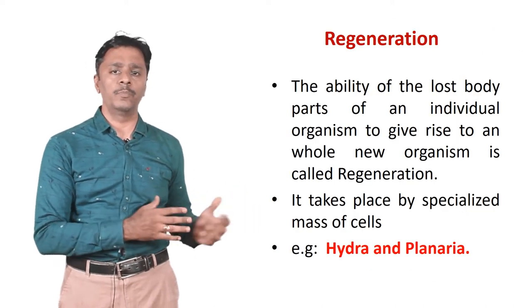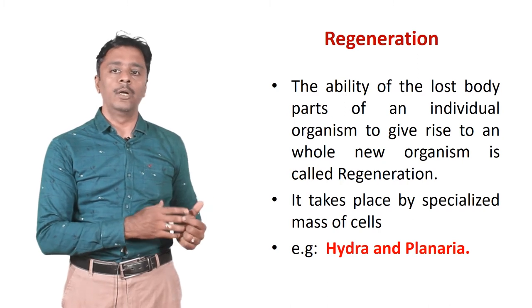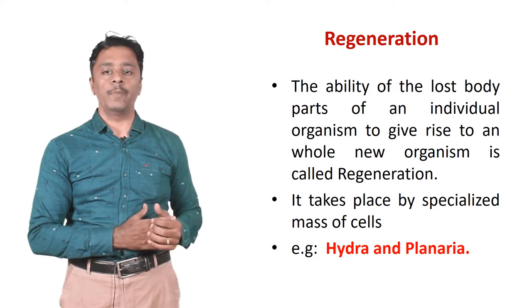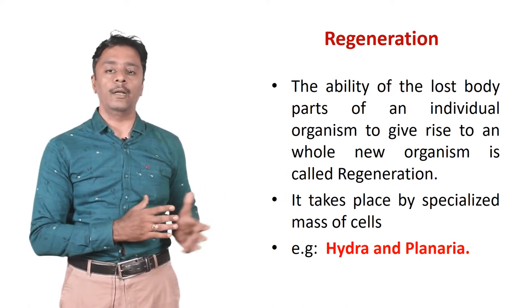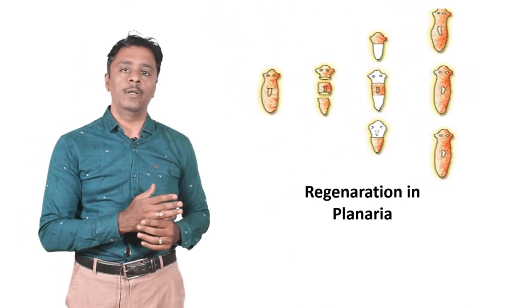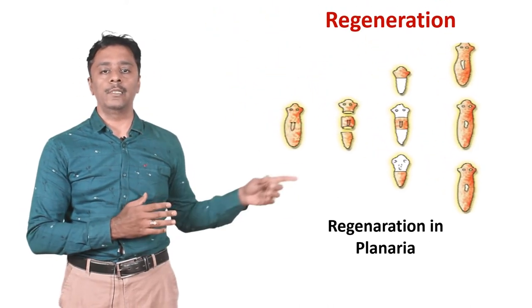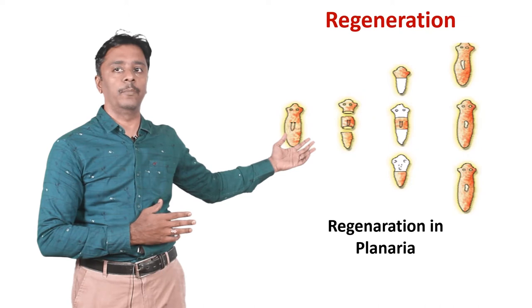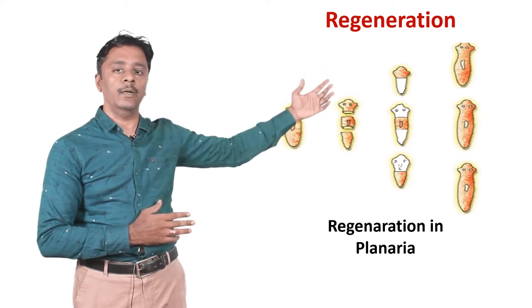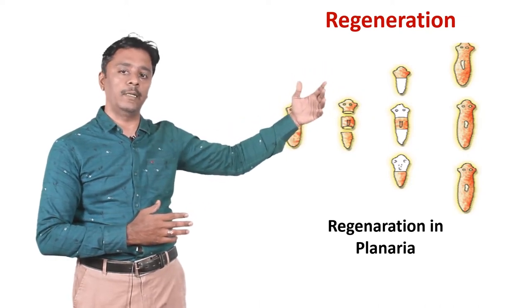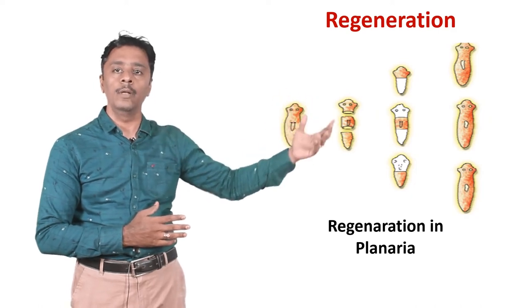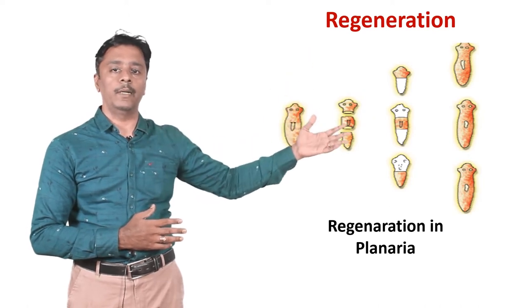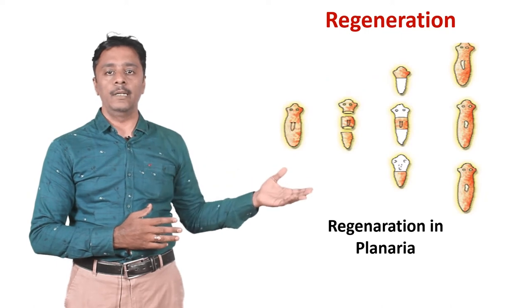The next one is regeneration. The ability of the lost body parts of an individual organism to give rise to a whole new organism is called regeneration. It takes place by specialized mass of cells. Examples are Hydra and Planaria. In Planaria divided into three different parts — head, middle part and tail part — the head part gives rise to a new Planaria, the middle part gives rise to another Planaria, and the tail part also gives rise to a new whole Planaria. Three different Planaria are formed. This is called regeneration.